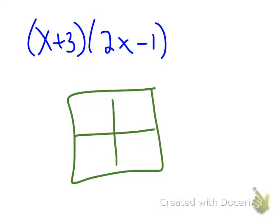And multiply that out. Now when I make my generic rectangles, I try to stay really consistent. So I take one of them here, my x plus 3, and place it on the side.